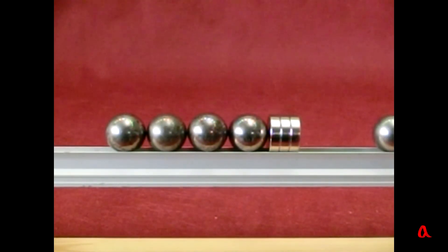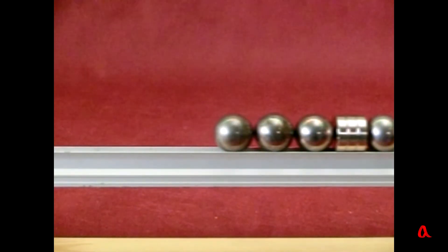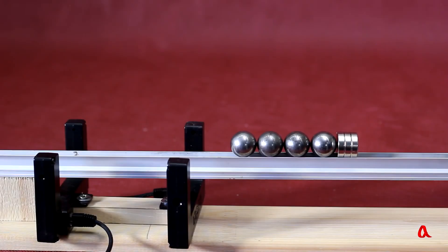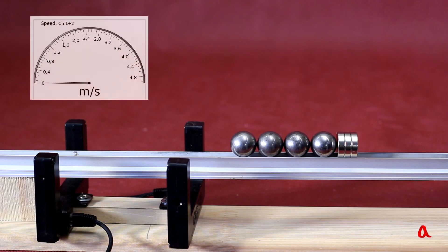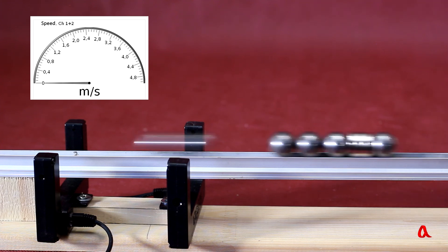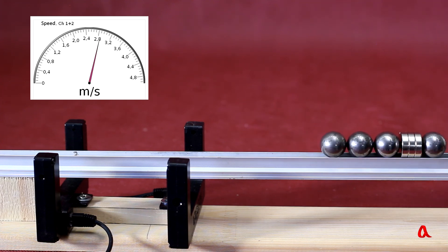It is curious what the speed of the bouncing ball may be. To find this out, we have placed two photo gates along its way 10 cm away from each other. A computer will time the ball in motion between the first and the second gate and then calculate the speed value of the ball. Here we go. The ball's speed value turns out to be 2.8 m per second.